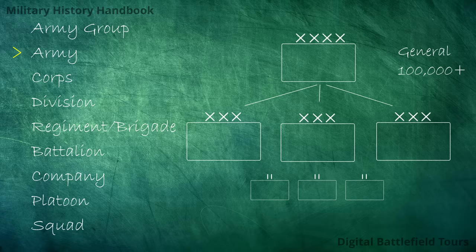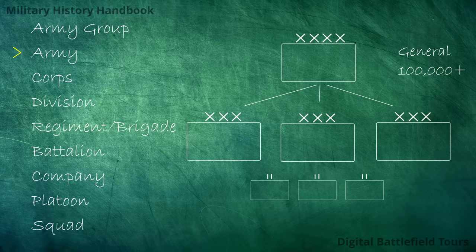Corps are usually subordinated to the army, being the next level. Armies usually contain around two to three corps and can also be assigned those same independent specialized battalions, kept at army level. An army usually numbers into the hundreds of thousands of men and is commanded by a general. Just like with the corps, the army as an operational formation can be confused with the army as the branch of the armed forces — but that's a different thing.